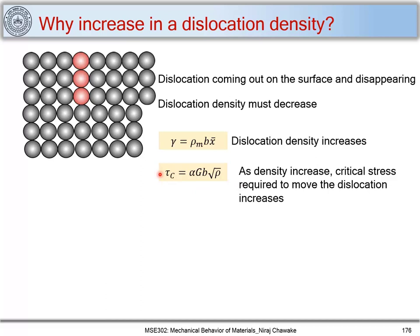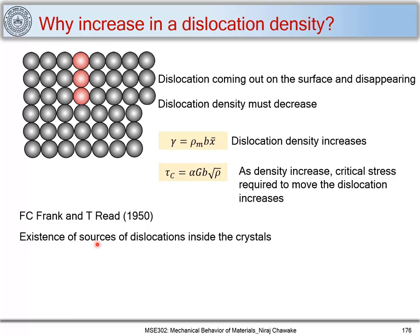Frank and Reed in 1950 independently came up with the idea that there must be dislocation sources which cause an increase in dislocation density. They proposed the existence of sources of dislocation inside the crystal which operate during plastic deformation and result in an increase in dislocation density. These sources are now called Frank-Reed sources.